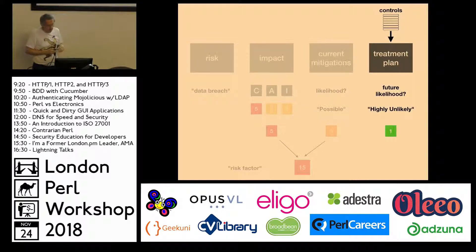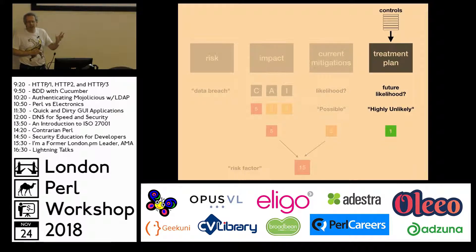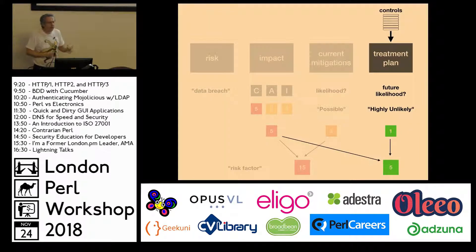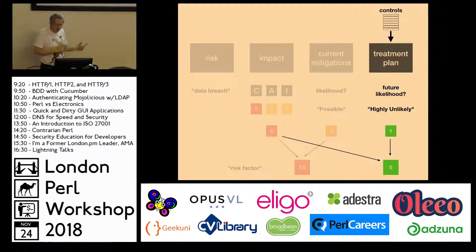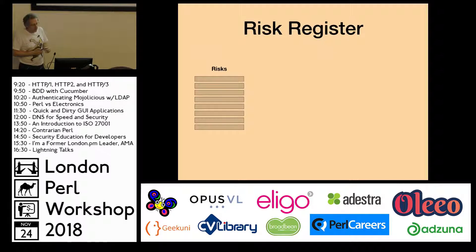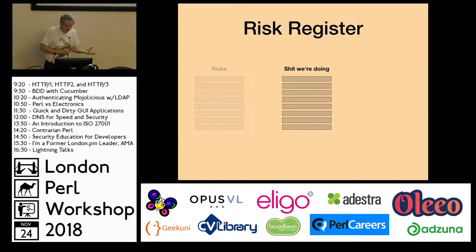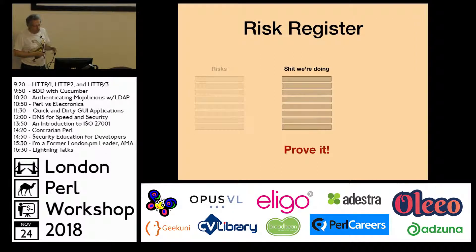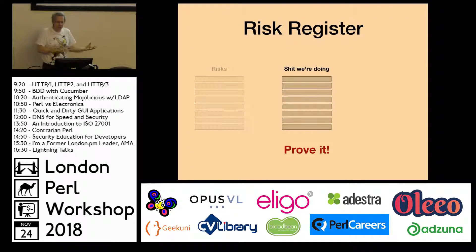You then need to think about a treatment plan — look at the list of controls and ask which of these should we be applying to better manage this risk. Given all those controls, what would the likelihood then be? It would hopefully be very unlikely if we were doing those things — giving you a new, lower risk factor. You apply this process over and over again through all your risks and you end up with a risk register: a big list of bad things that can happen and the stuff you're doing now to manage them.